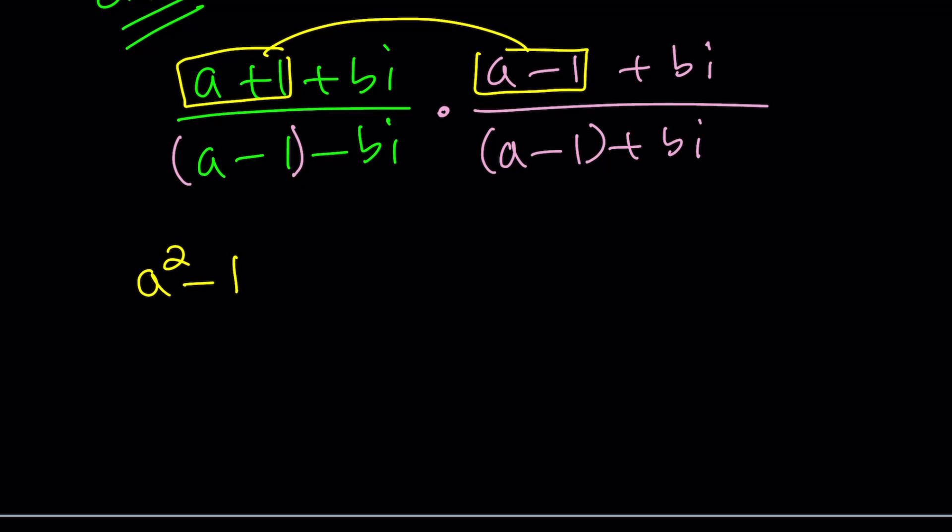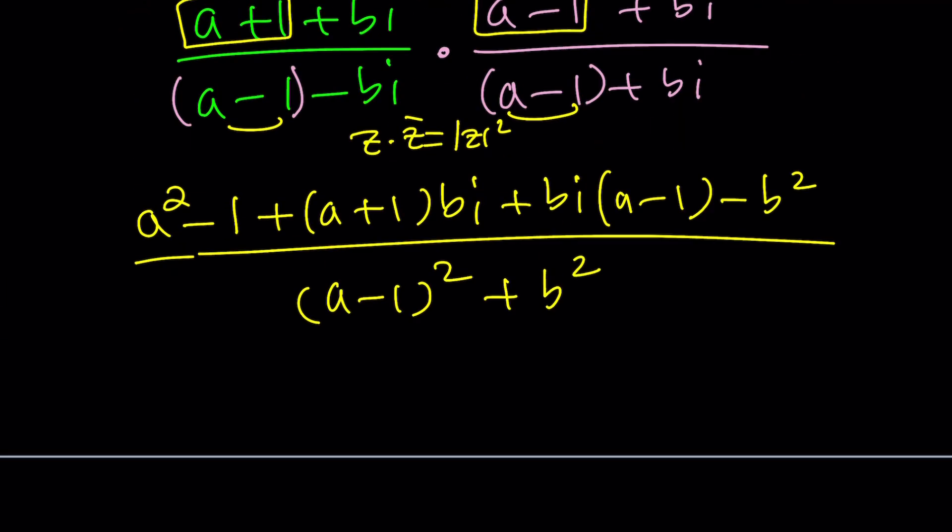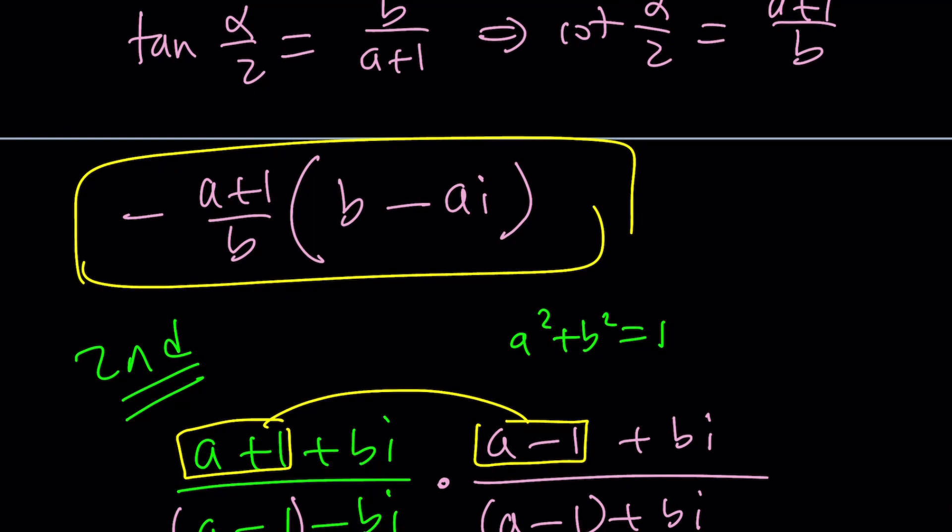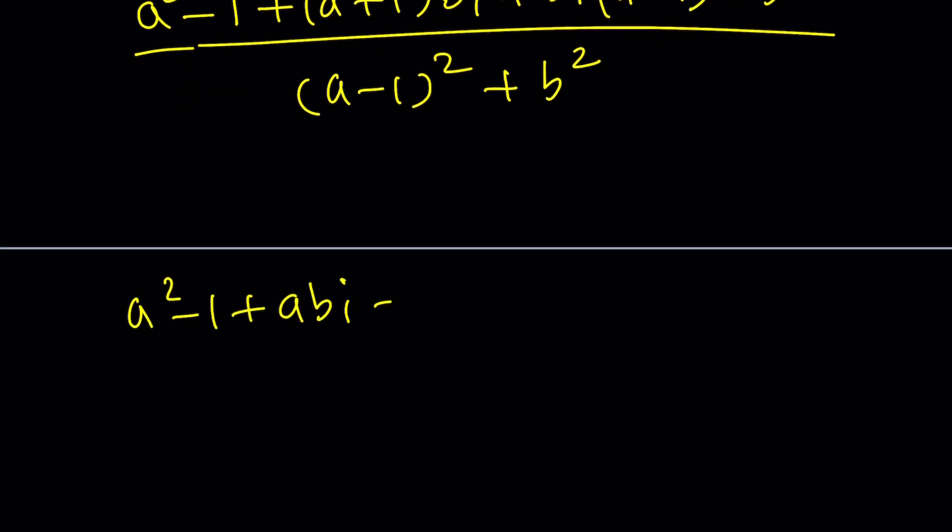I extended it as long as the hypotenuse here, which is 1, so that just created an isosceles triangle. Therefore, from the exterior angle theorem, I got half of alpha. From here, we can find cotangent alpha over 2 with a negative sign. Tangent alpha over 2 is just going to be b over a plus 1. You have to invert it and then negate it, which is going to give us negative a plus 1 over b. What is sine alpha? Sine alpha is b, and this is a.